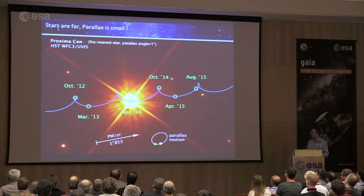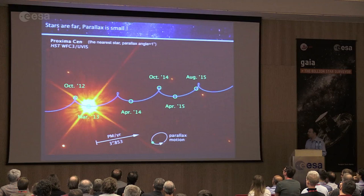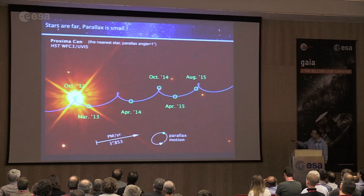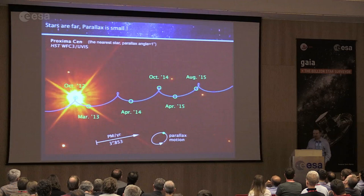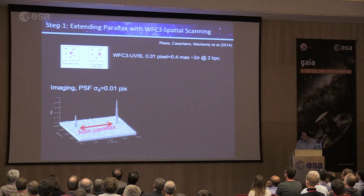It might look easy to measure parallax for nearby stars, but the challenge is this is the very nearest star at about 1 parsec. We're interested in stars thousands of times farther away, so the parallax deflection angle becomes thousands of times smaller — completely invisible to the eye, requiring very careful measurements with specialized instruments.